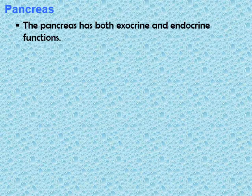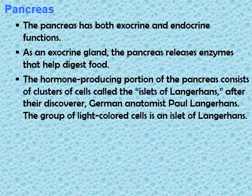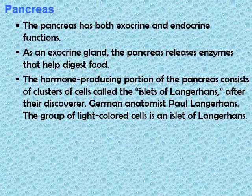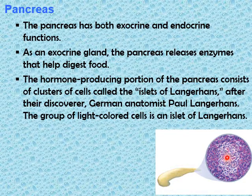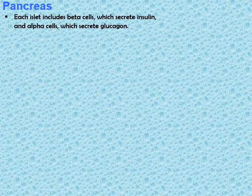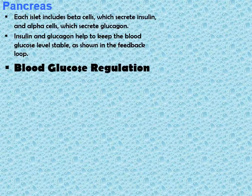The pancreas has both exocrine and endocrine functions. As an exocrine gland, the pancreas releases enzymes that help digest food. The hormone-producing portion consists of clusters of cells called the islets of Langerhans, named after German anatomist Paul Langerhans. These light-colored cells produce the endocrine hormones insulin and glucagon. Each islet includes beta cells which secrete insulin and alpha cells which secrete glucagon. Insulin and glucagon help keep the blood glucose level stable, as shown in the feedback loop of blood glucose regulation.